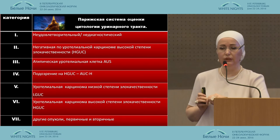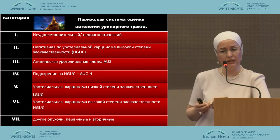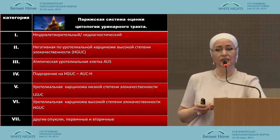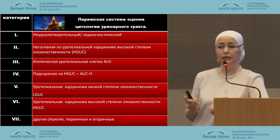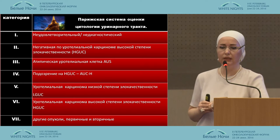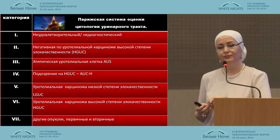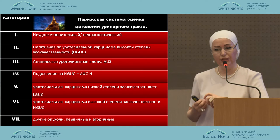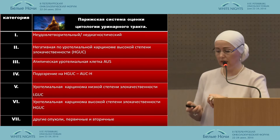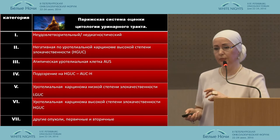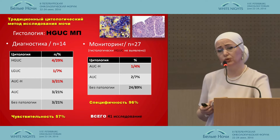Seven categories were defined: not adequate material, the second category — negative for urothelial carcinoma, then atypical urothelial cells, and so on, up to other tumors and metastatic cases. Here you can see the outcomes.